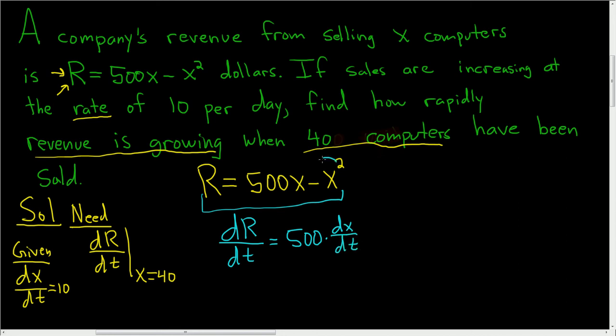Here we can use the power rule, so you bring the 2 down, so you get minus 2X times the derivative of the inside. X here is a function of time, so this is dX/dt.